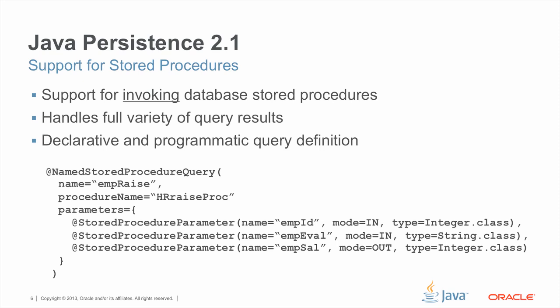To use this facility, you need to define to the persistence provider how these stored procedures are going to be accessed. You can do this either declaratively through the named stored procedure query metadata, or programmatically through an API for runtime access. In this example, we're defining a named stored procedure query with the name emp-raise, and we're defining its correspondence to a stored procedure in the database whose name is hr-raise-proc. This stored procedure is defined to have three parameters. Two of these are input parameters of type integer and type string. The third is an output parameter, which the stored procedure is going to use to pass back its result.